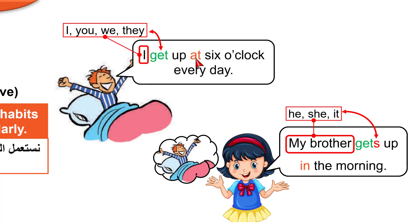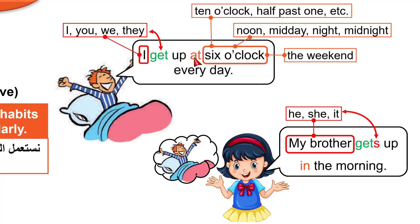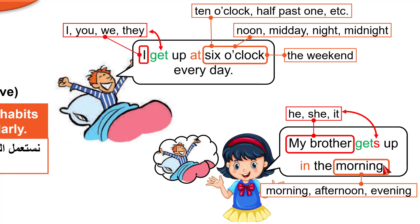This S is not the plural S like one pen, two pens — it is different; this is the present simple third-person S with he, she, and it. Also look at prepositions of time: we use AT with specific times like six o'clock, ten o'clock, half past one, or noon — noon means 12 p.m., midday also means 12 p.m., and midnight is 12 a.m. We also use AT with the weekend in British English. In American English they say on the weekend.